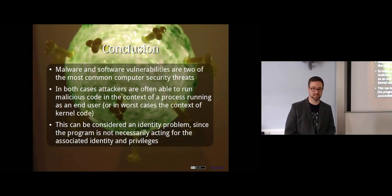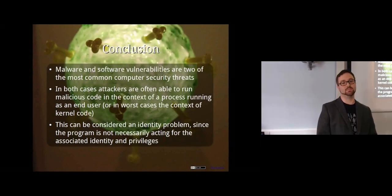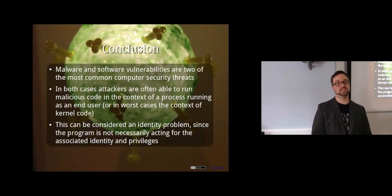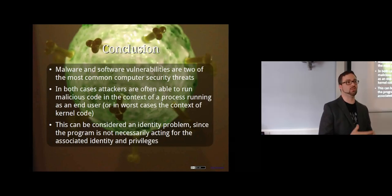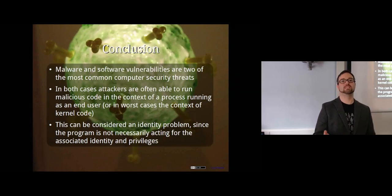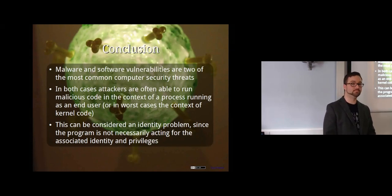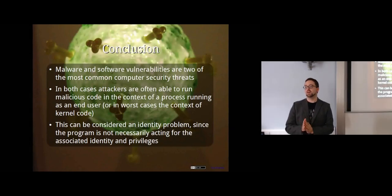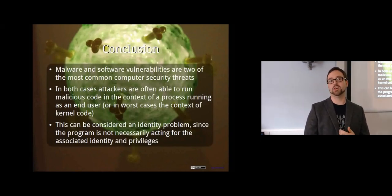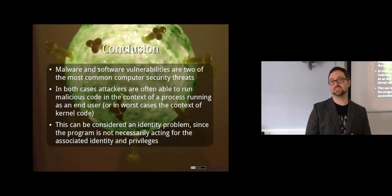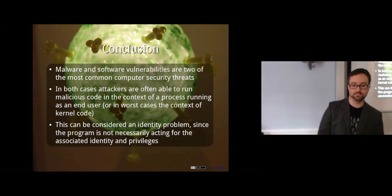In conclusion: malware and software vulnerabilities are very common security threats. In both cases, they allow an attacker to run malicious code in the context of a process running as the end user, or in the worst case, as the kernel. It's essentially an identity problem — we're forced to trust that a program is acting on our behalf when it isn't necessarily. This week's lab involves starting to look at Metasploit, and you'll actually generate your own Trojan horse software to examine.